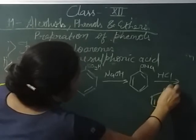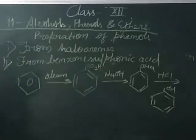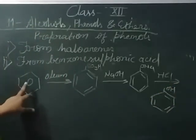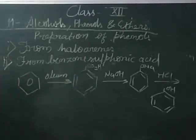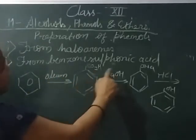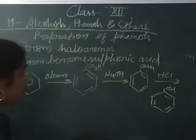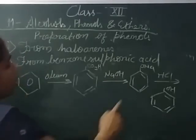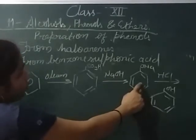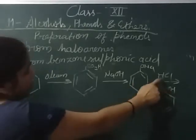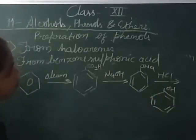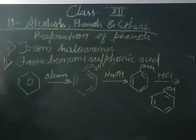To summarize the second method: benzene reacts with oleum to form sulfonic acid. The sulfonic acid is then fused with NaOH to form sodium phenoxide. Sodium phenoxide is then acidified and converts into phenol.